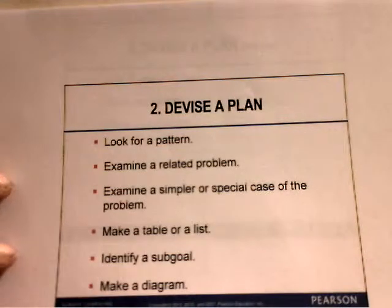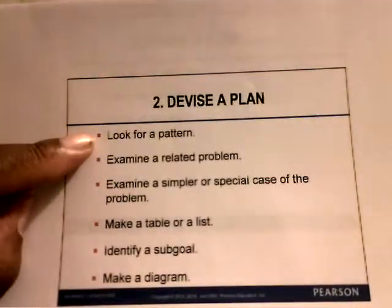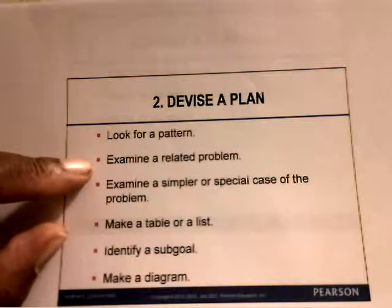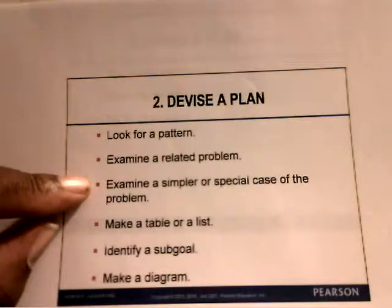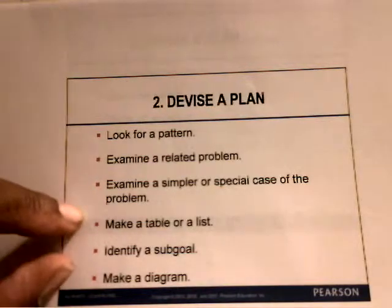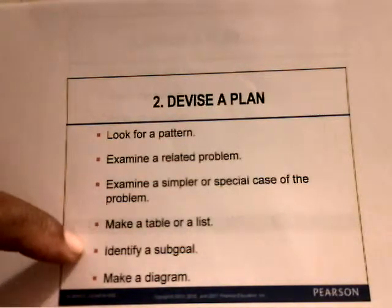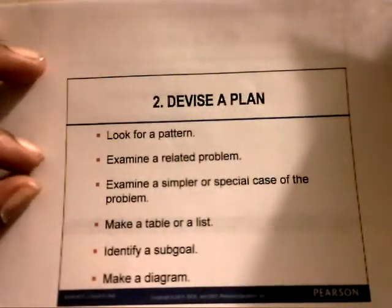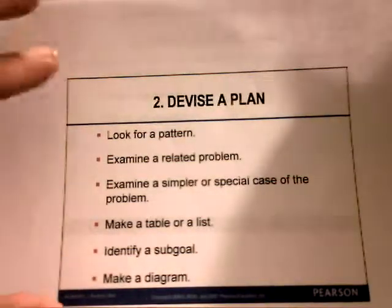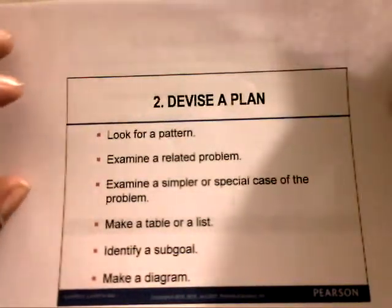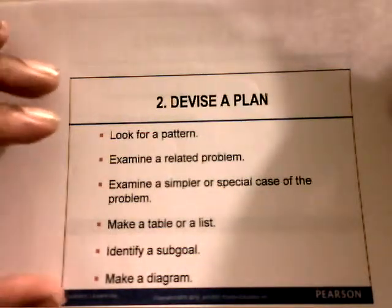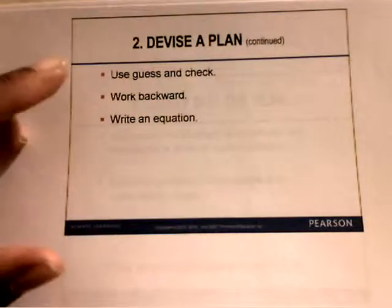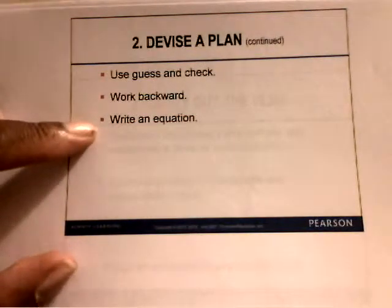Then step number two, you want to devise a plan. You want to look for a pattern, examine a related problem, or examine a simpler or special case of that problem. Then make a table or a list, identify a sub-goal, or make a diagram. Sometimes when you devise a plan, you might have to draw a picture to get a visual idea of what that problem is asking you to do. You can also use guess and check, work backward, and write an equation.